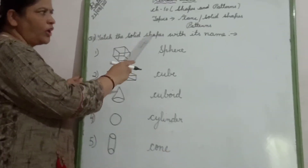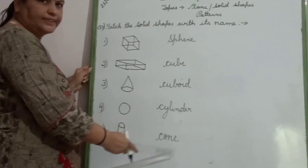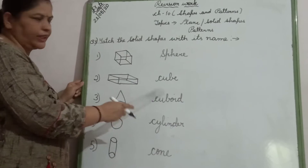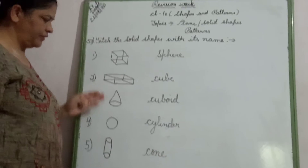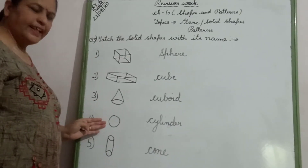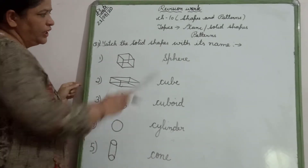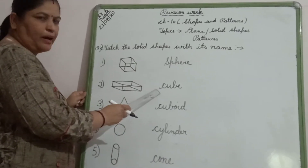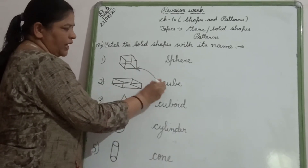Now we come to question number 3: Match the solid shape with its name. Here are some solid shapes and here are some names. You have to match the correct solid shape with the correct name. This picture is of cube. This is cuboid. This is cone. This is sphere. And this is cylinder. The first picture is of cube — C-U-B-E — in the second number. So we will match the cube shape with the spelling of cube.